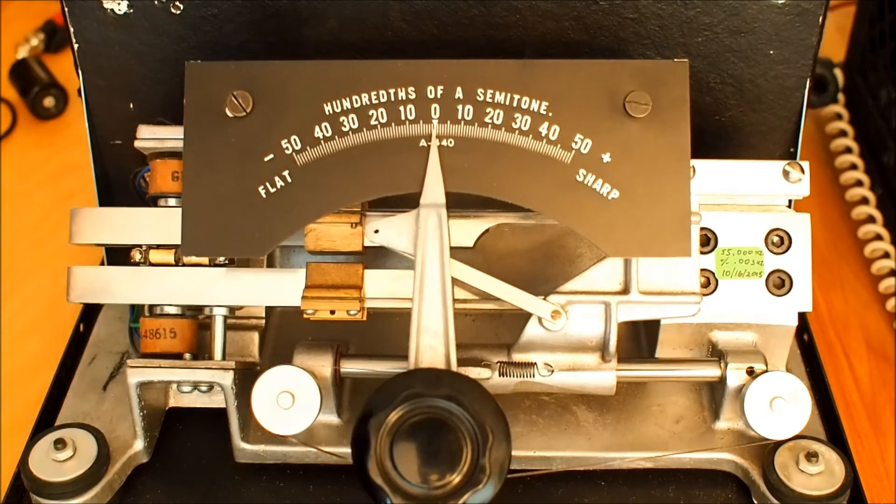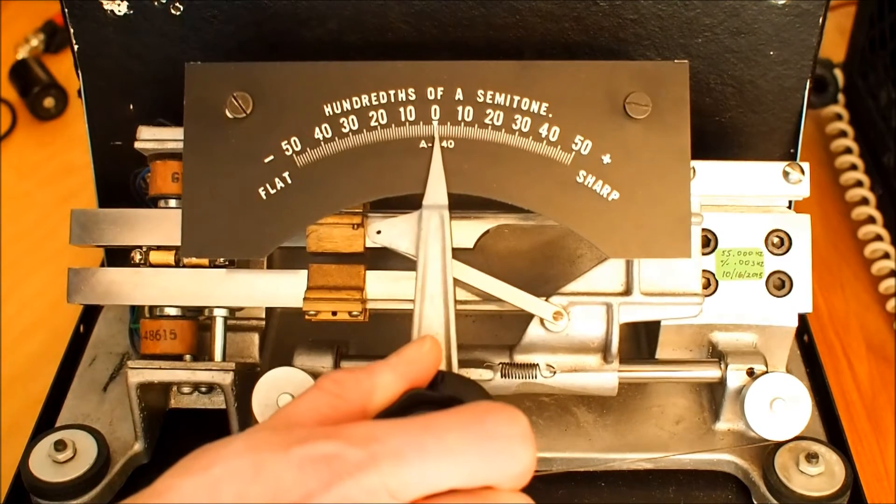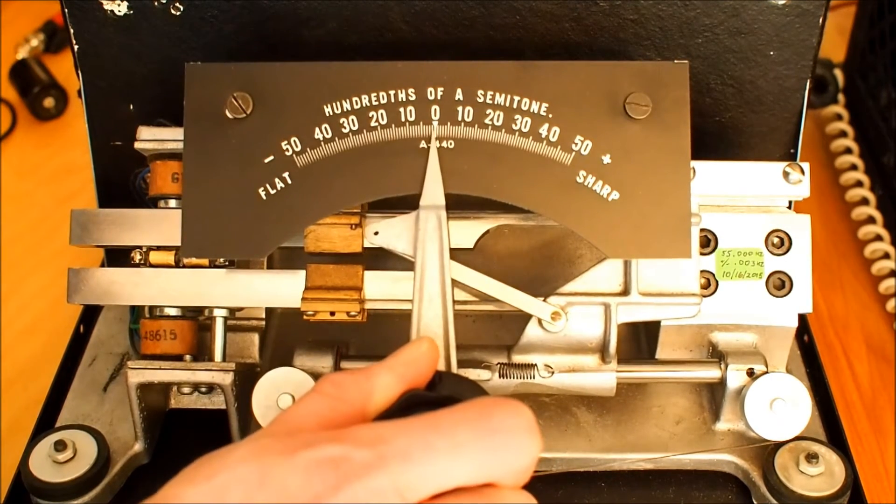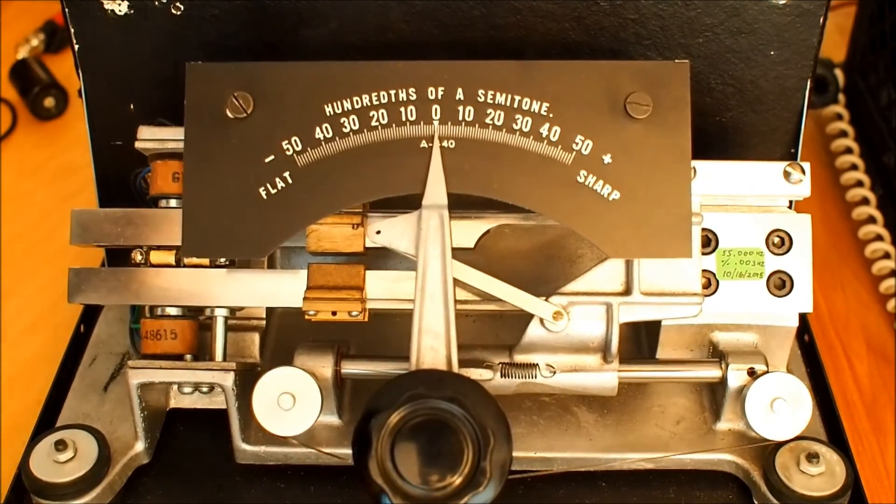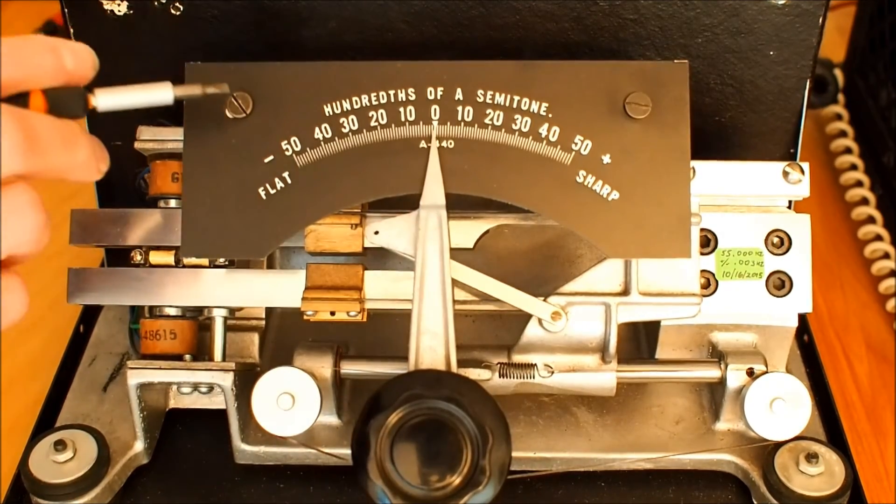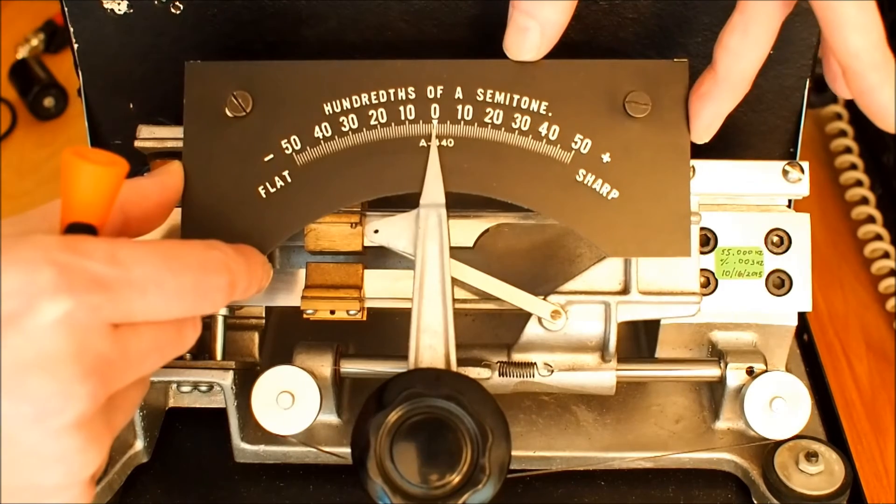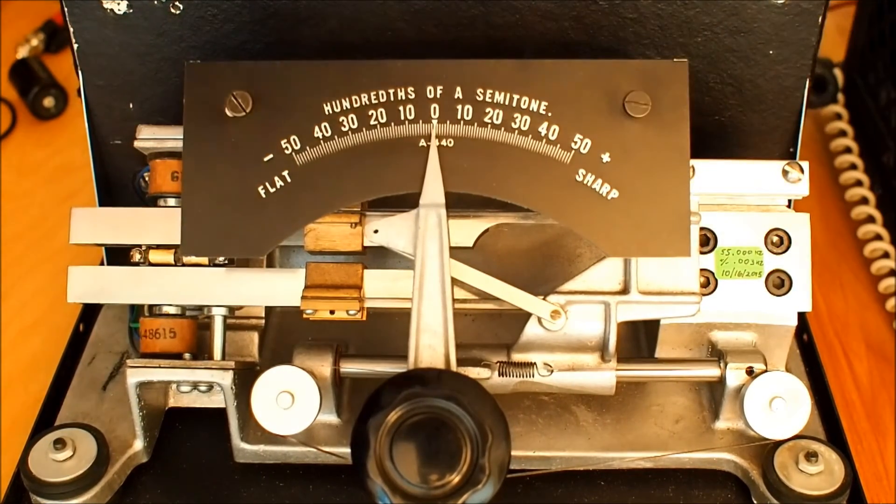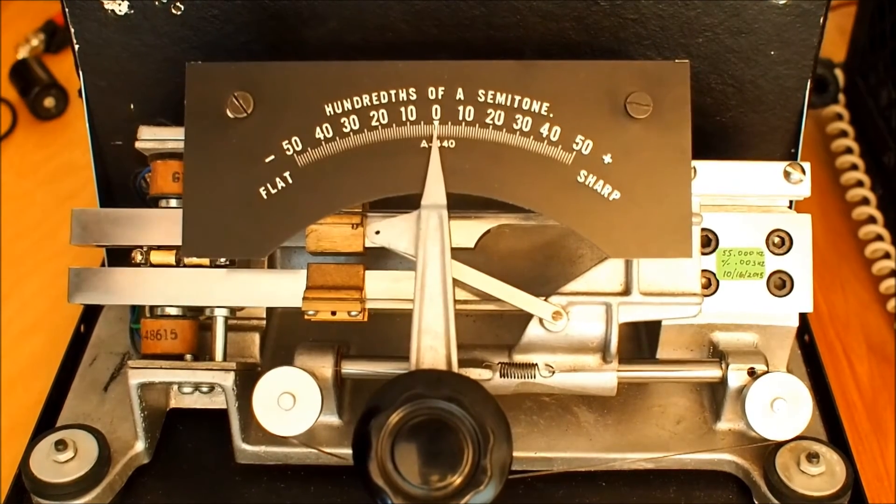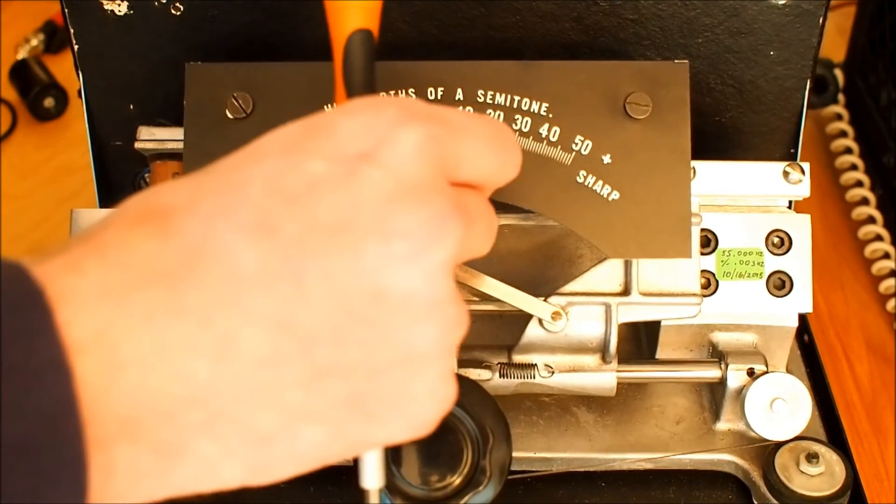If, somehow, you are lucky enough to have it to where it is within one or two cents of being dead on against a reliable source like the Keithley meter that we checked, what you can do is you can loosen these two screws here and shift this plate just a little bit to get the needle pointing at zero when you have the instrument zeroed out. That's kind of how you do the very last fine adjustment of this needle.